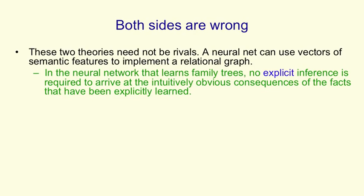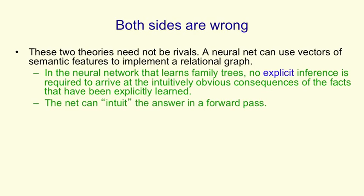Now if you look at the details of what's happening, there are lots of probabilistic features that are influencing each other. We call these micro-features to emphasize that they're not like explicit conscious features. In a real brain there might be millions of them, and millions of interactions. And as a result of all these interactions, we can make one step of explicit inference. And that's what we believe is involved in just seeing the answer to something.